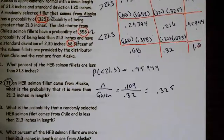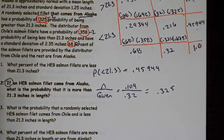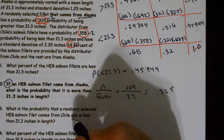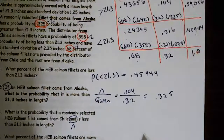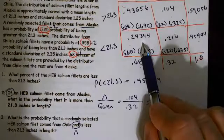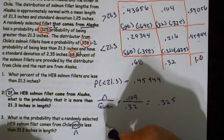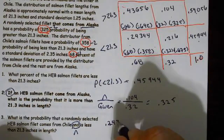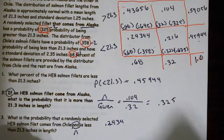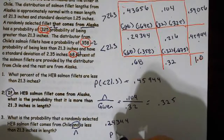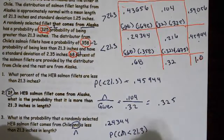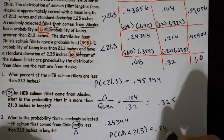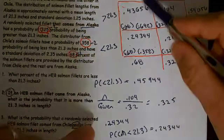What is the probability a randomly selected HEB fillet comes from Alaska and is less than 21.3? This isn't conditioned on anything, but we have 'and,' which means we're looking for the overlap. We're looking for the intersection of the two, and we can just pull that straight out of the table, which is 0.24344. And that's the probability of Alaska intersect less than 21.3 — or rather Chile intersect less than 21.3 — which equals 0.24344.